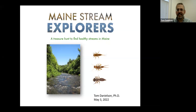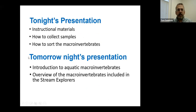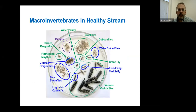Welcome everybody — I'm so happy to have Year 3 of Stream Explorers. Tonight I'll talk about the instructional materials, how to collect samples, and how to sort macroinvertebrates. Tomorrow night we'll talk more about what aquatic macroinvertebrates are and an overview of the types you'll be seeing in Maine streams. Macroinvertebrates are animals without backbones that you can see without magnification.